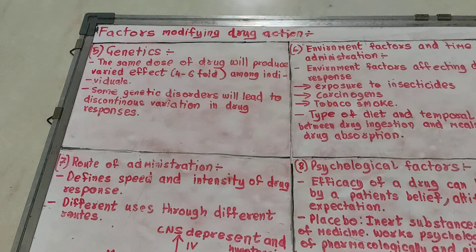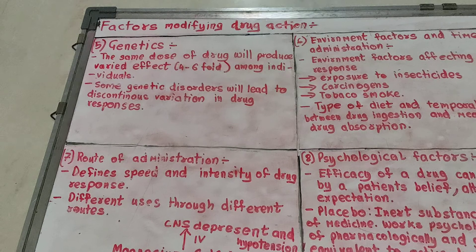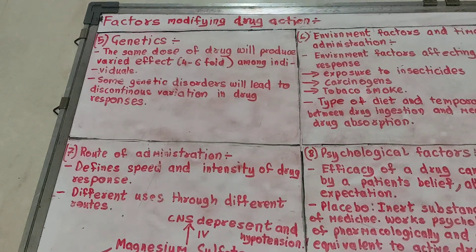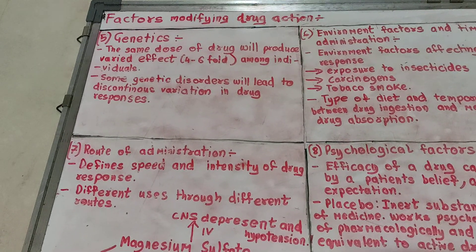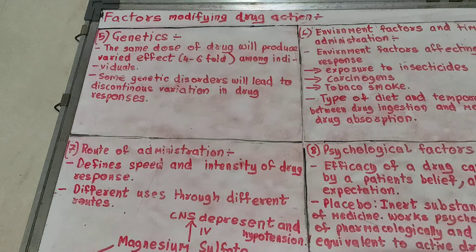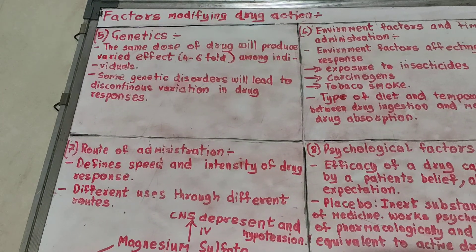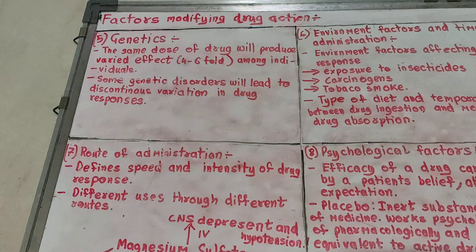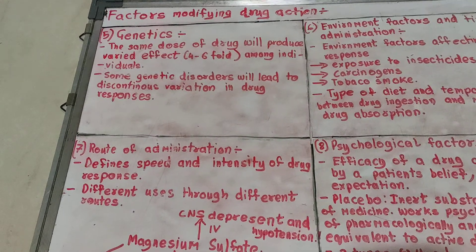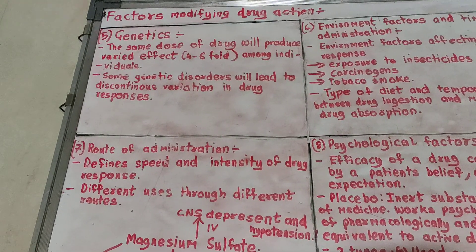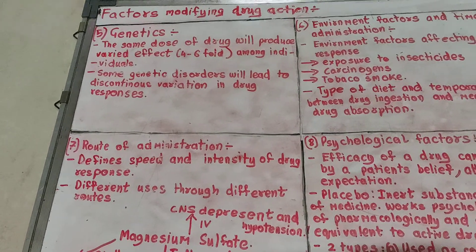Let's begin with genetics. The set of genes that a human possesses is different for everybody, so a drug that goes into person A and a drug that goes into person B differs variedly — that variation can be up to four to six fold. Hence the drug result in both persons will vary. Some genetic disorders will lead to discontinuous variation in drug responses, meaning the drug will respond in a different manner than it does in a normal individual.